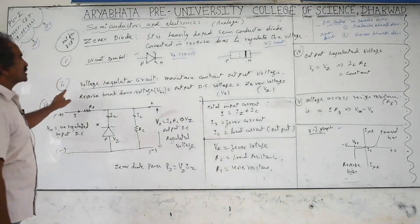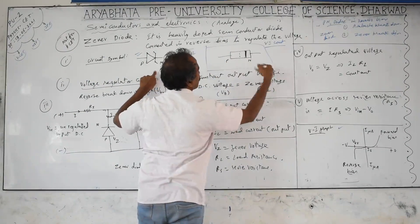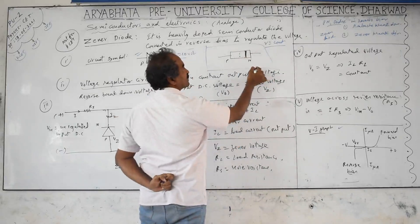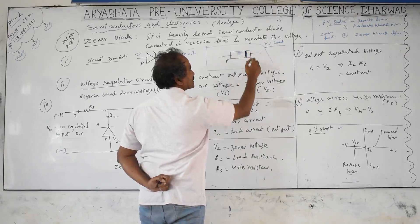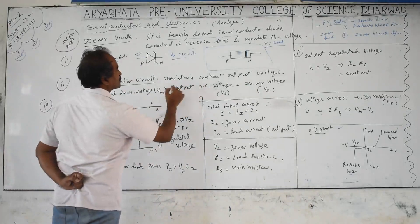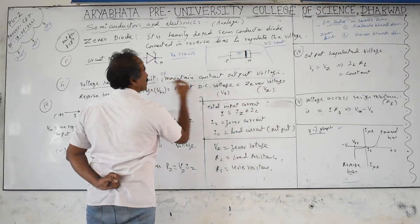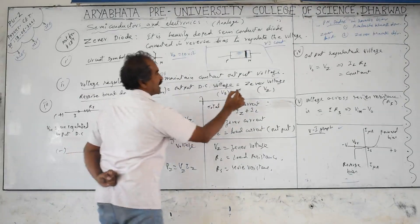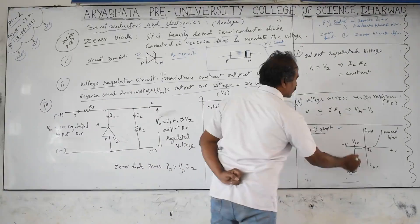The physical block diagram of a Zener diode looks like a PN diode — generally reddish or transparent in color, with a dot indicating the N-type material side. In the voltage regulator circuit, the reverse breakdown voltage equals the output DC voltage, and these are equivalent: Vz = Vbr = Vo. The Zener diode must be connected in reverse bias in the circuit.